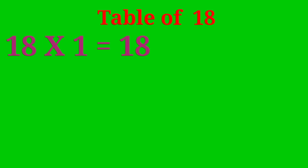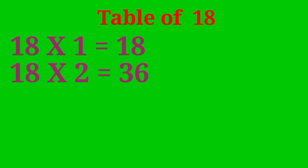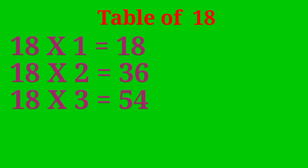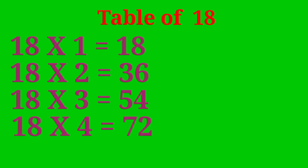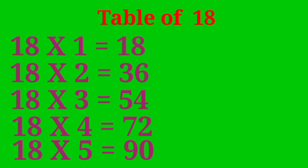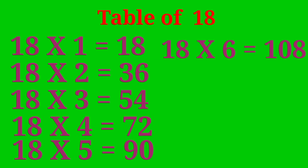Table of 18: 18×1 are 18, 18×2 are 36, 18×3 are 54, 18×4 are 72, 18×5 are 90, 18×6 are 108, 18×7 are 126.